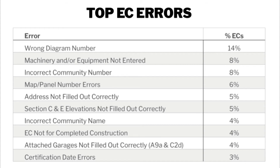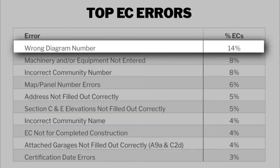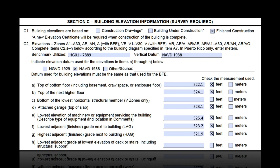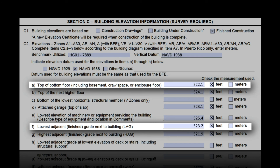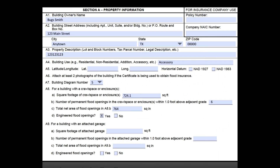The most common error is the wrong diagram number. You can usually tell this is wrong by knowing the type of building being built, or by looking at the elevations in Section C and seeing they don't match the building diagram in A7. For example, if C2A (bottom floor) is below C2F (lowest adjacent grade), the building likely has a basement or subgrade crawl space, pointing to diagram 2A, 2B, 4, or 9. First, confirm the correct diagram number, then choose the best correction method — contact the surveyor first, or use the memo of correction or a comment in Section G.